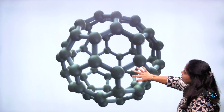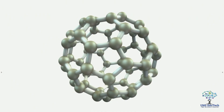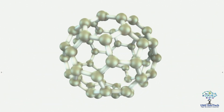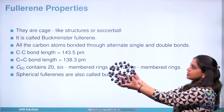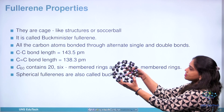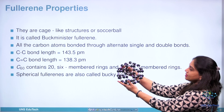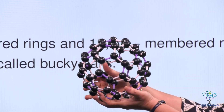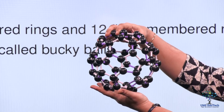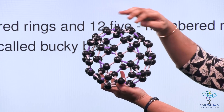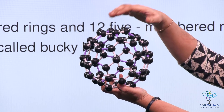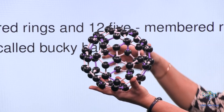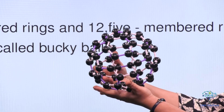Here is a 3D model of a fullerene. It is a cage-like structure — that is why it is also known as a bucky ball. The carbon atoms are arranged in alternating double and single bonds, and there are nearly 60 carbon atoms, which is why it is also known as C60.